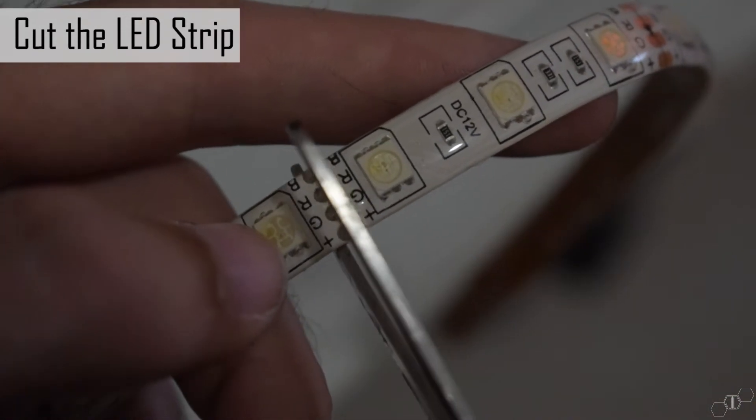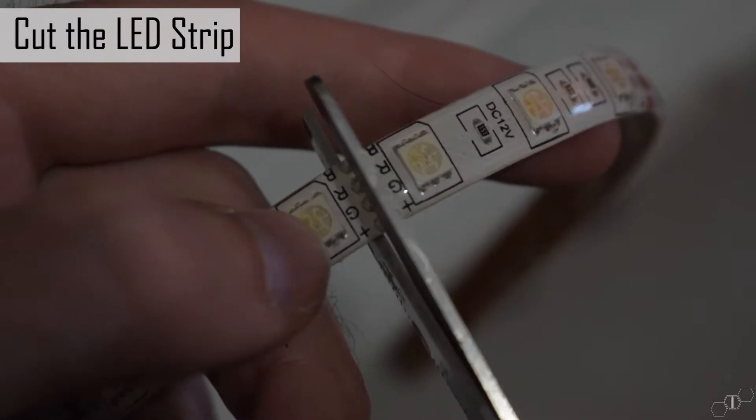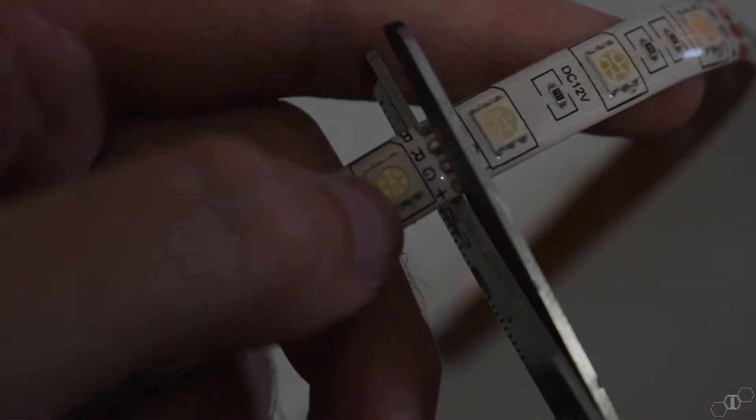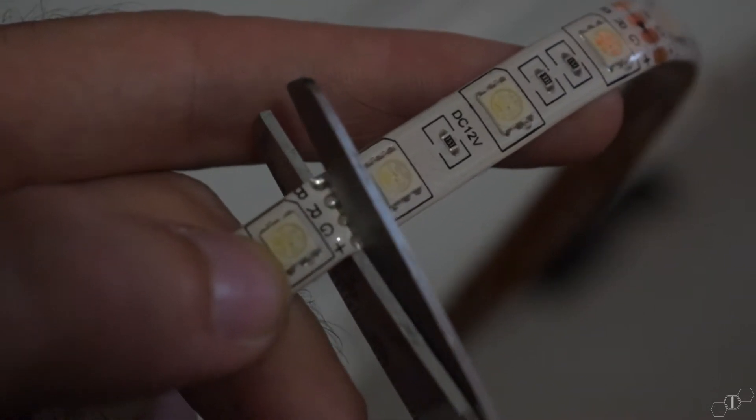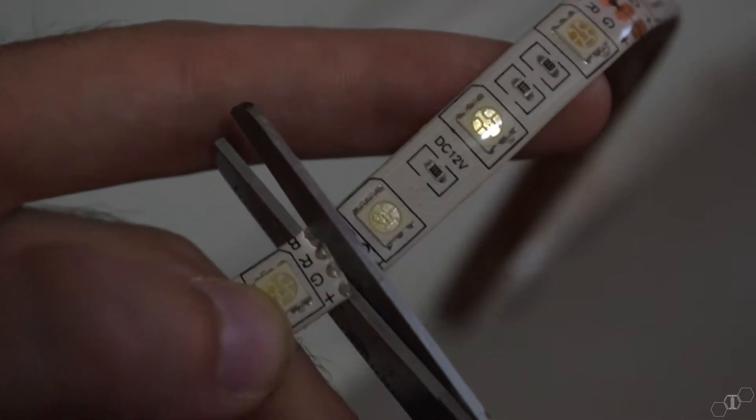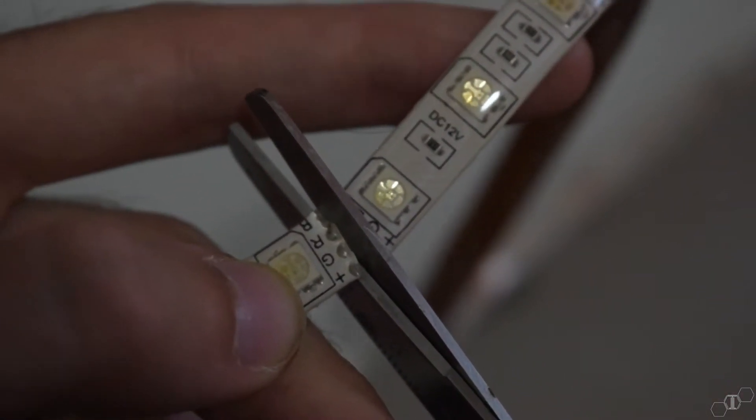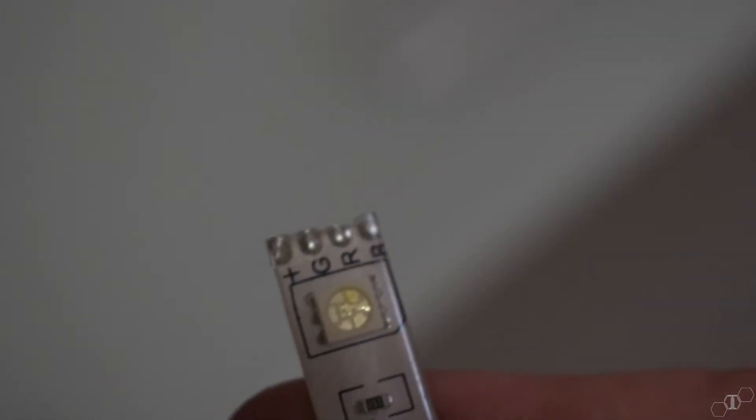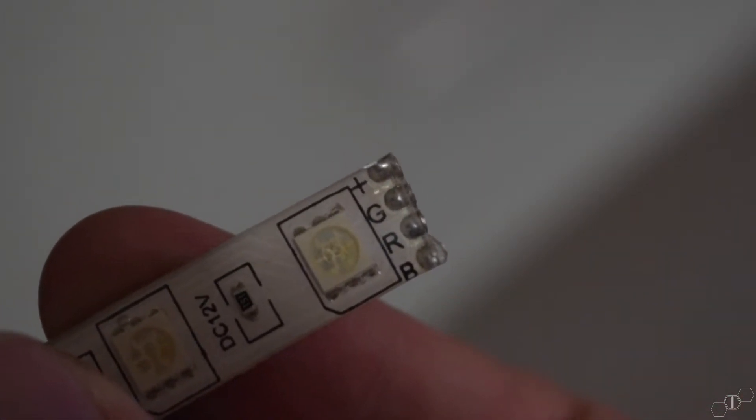Before we move onto the LED strip, we have to cut it to size. Pay attention to the markings on the strips. It will show clearly where you can cut it or have simple soldering points, meaning you can cut there. Usually LED strips will have pre-soldered RGB connectors on both sides. Since I haven't yet used mine, I don't have to worry about that. I can just connect it directly and be done with it.